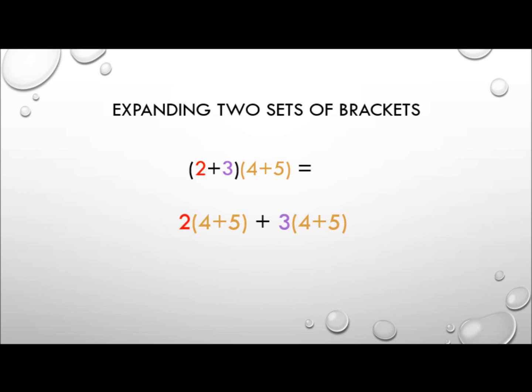To expand out (2+3)(4+5), we multiply the (4+5) term by the 2 and then multiply the (4+5) term by the 3. So we distribute it as 2(4+5) + 3(4+5).